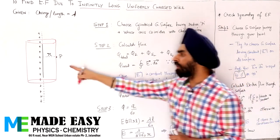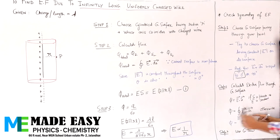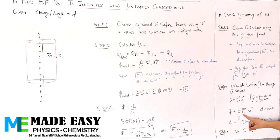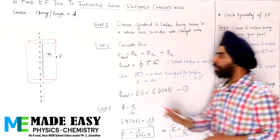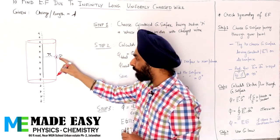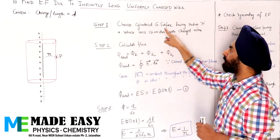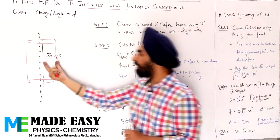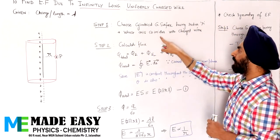Remember: the Gaussian surface must pass through the same point where you want to find the electric field. Going back to that expression — when you calculate flux, the E inside the flux expression is the value of E on the surface of the closed Gaussian surface. So step 1 is: choose a cylindrical Gaussian surface having radius equal to small r, whose axis coincides with the charged wire.